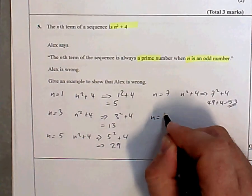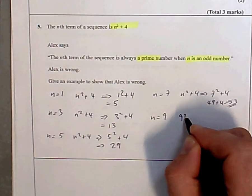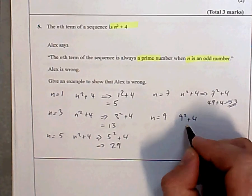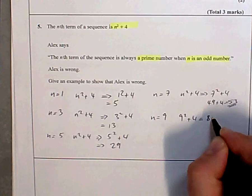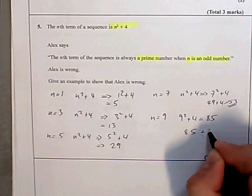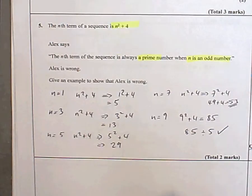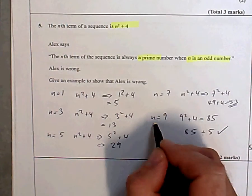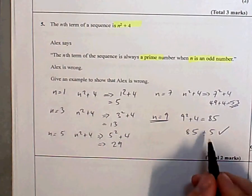n equals 9. 9 squared plus 4. 9 squared is 81, plus 4 is 85. Because it ends in a 5, I know it's divisible by 5. So it's not a prime number. I've showed that Alex is wrong. When I substitute 9 in, I get a number that's not prime.